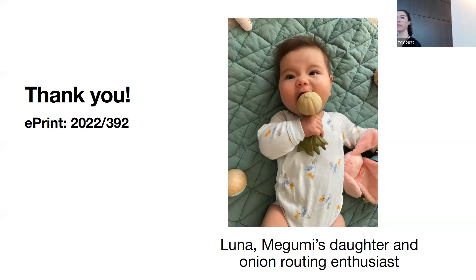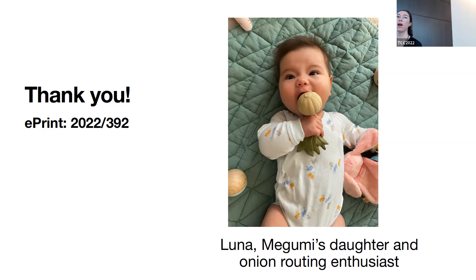Question about the committee: Do you need two-thirds honest majority? Response: We just need an honest majority, but the parameters are tunable — Alice can choose how many committee members she wants to be honest when she forms her onion. Regarding the corruption threshold: we assume static corruption within each run of the protocol, but the adversary can corrupt parties based on previous runs of the protocol in the multi-run setting.